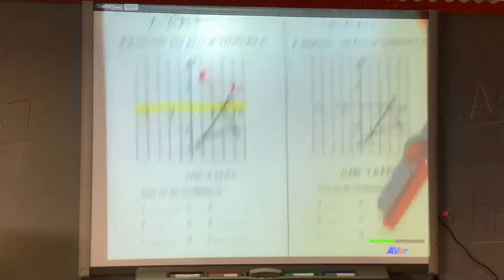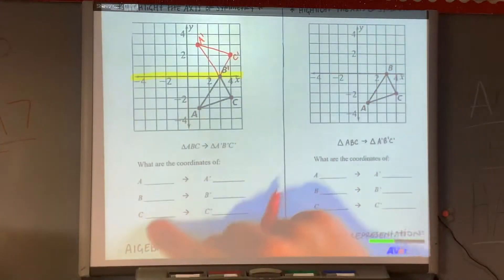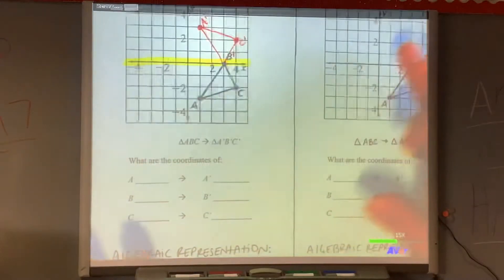And now I have flipped the triangle over the x-axis. So flipping a triangle over the x-axis, it will change the coordinates somehow, some way.